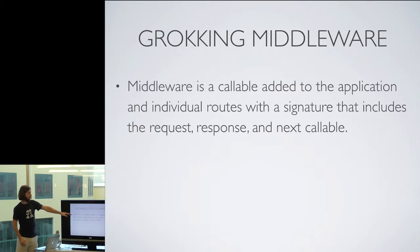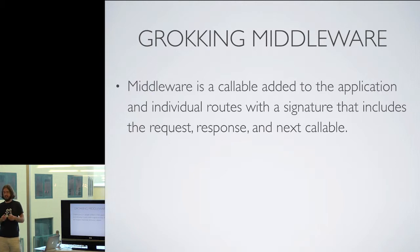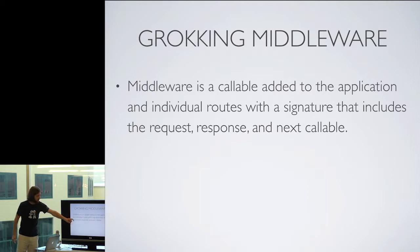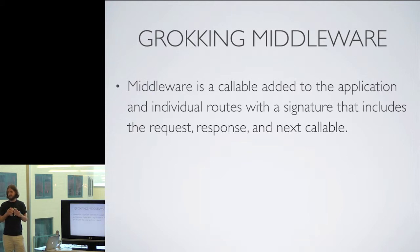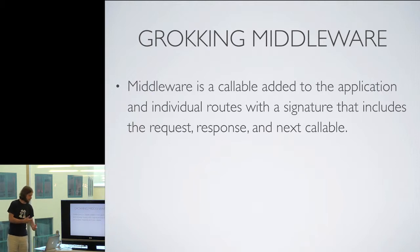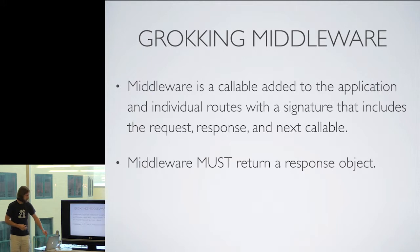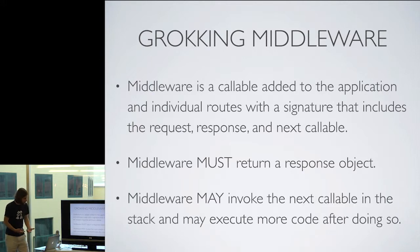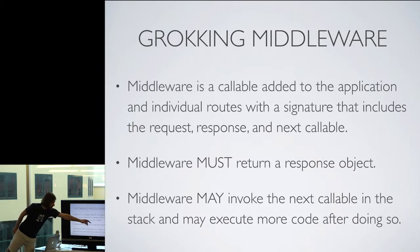A middleware is just anything callable that you add to the application or route-level stack. It has a common signature which in Slim includes a PSR7 request object, response object, and a callable — typically called "next." Slim manages building a stack out of these things and executing through the call stack. You just have to remember the signature, and at the end of the day it must return a response object.